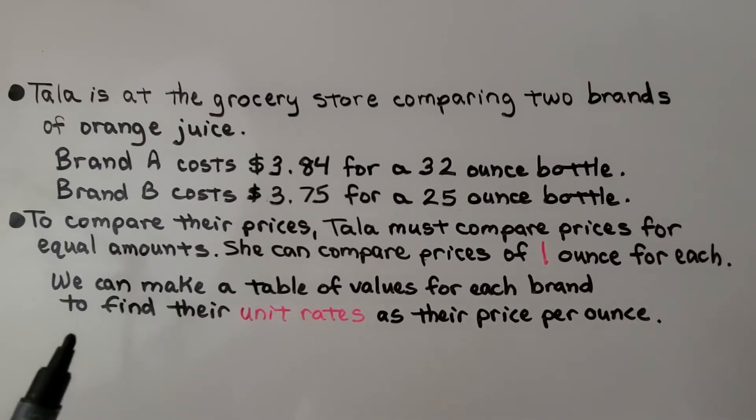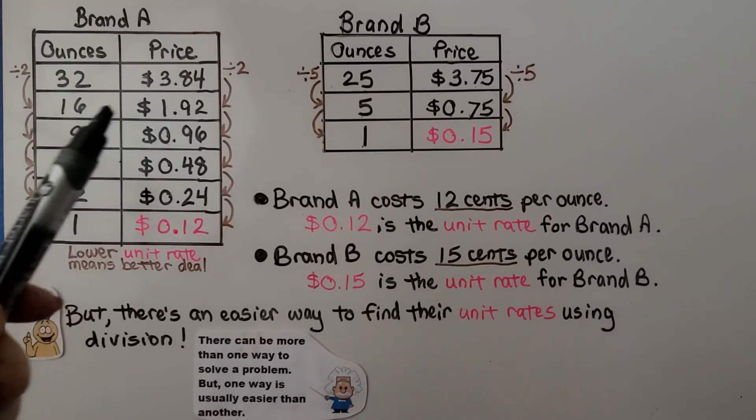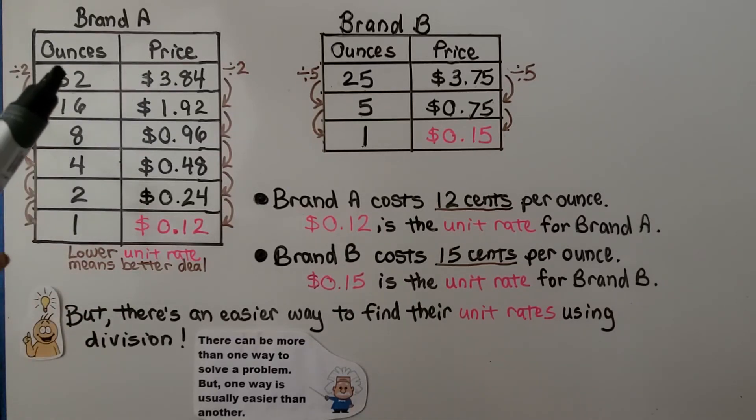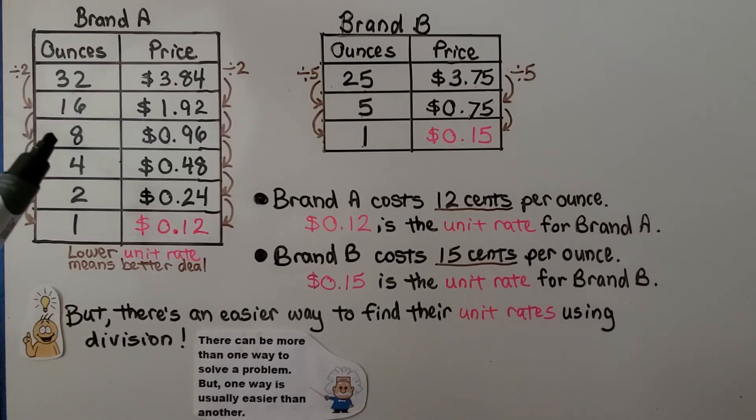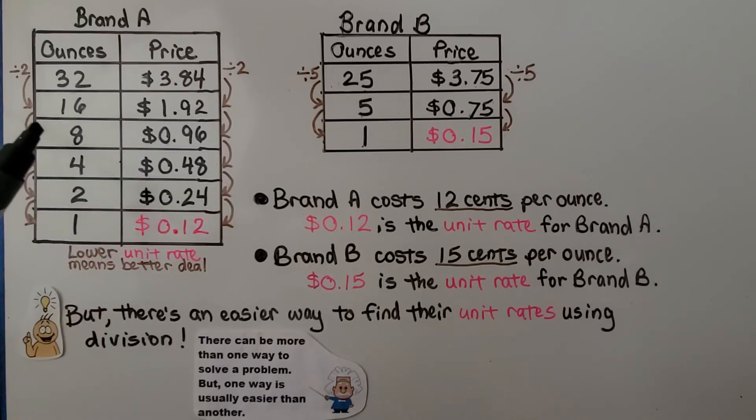That would be their unit price. We can make a table of values for each brand to find their unit rates as their price per ounce. So we can make a table for Brand A: we have the ounces and the price. It was 32 ounces for $3.84. We can divide the 32 by 2, we get 16. We divide the price by 2 and get $1.92. Then we divide that again by 2, it would be 8. We divide this price by 2, we get $0.96.